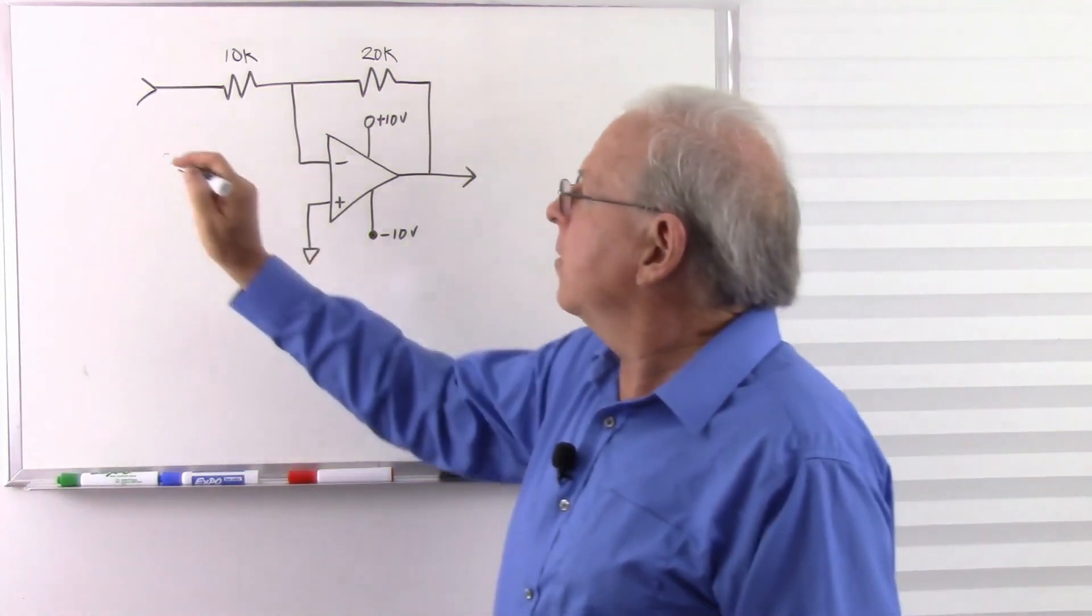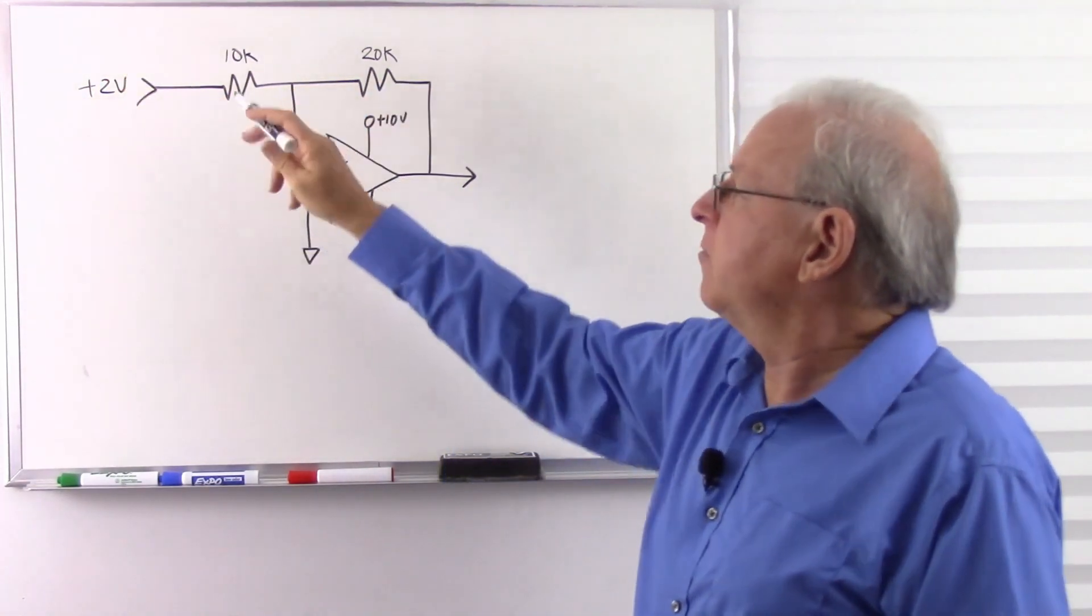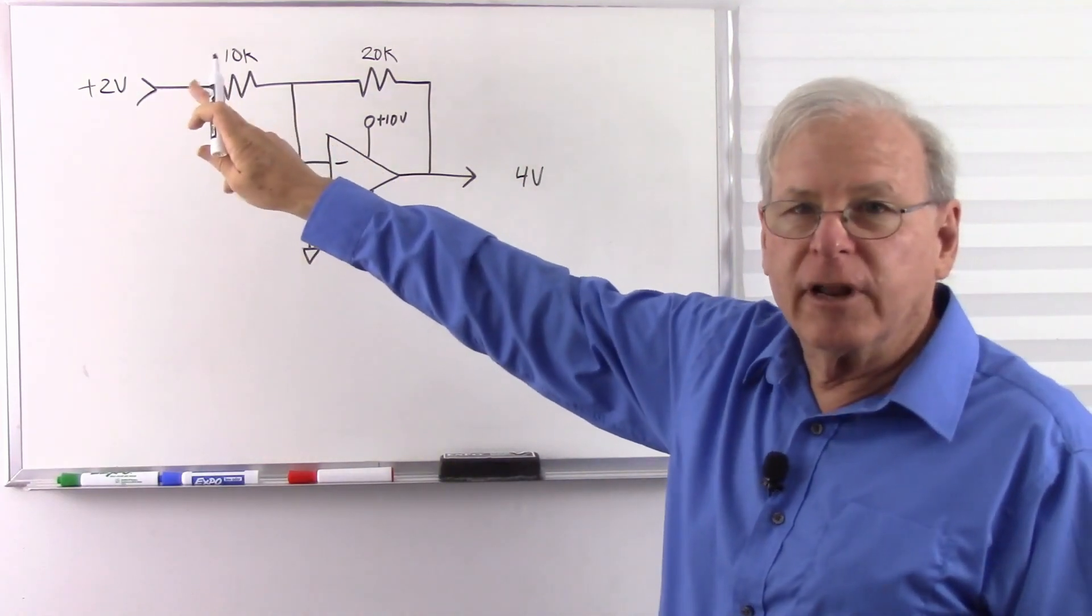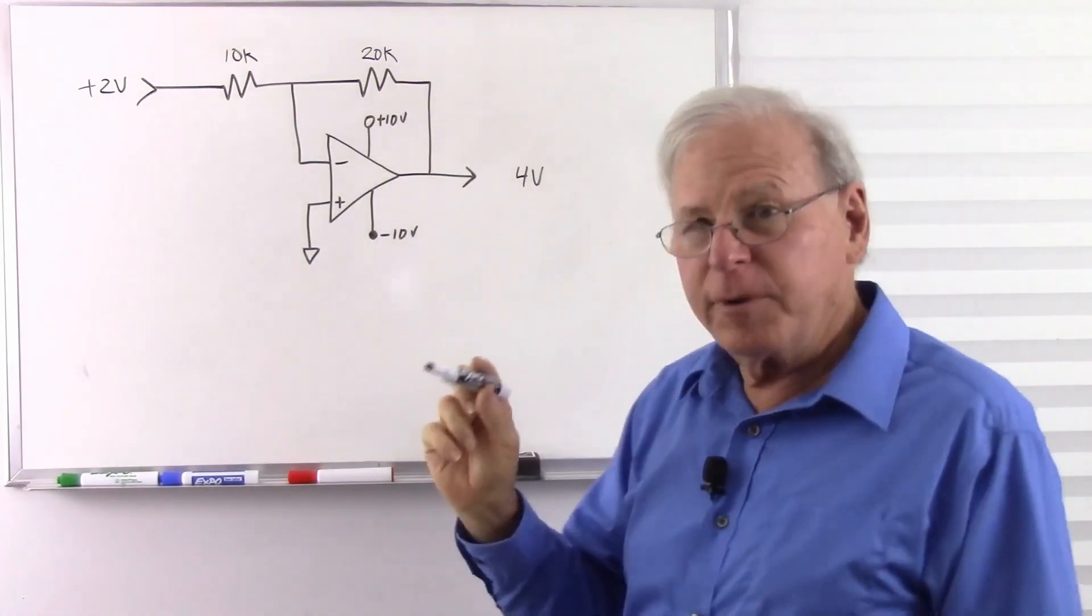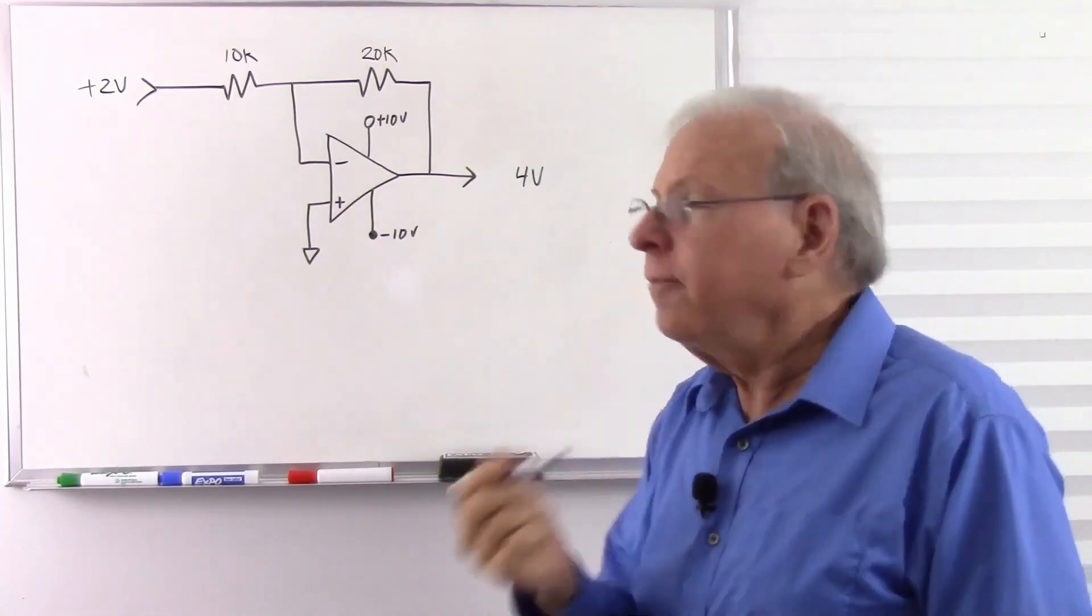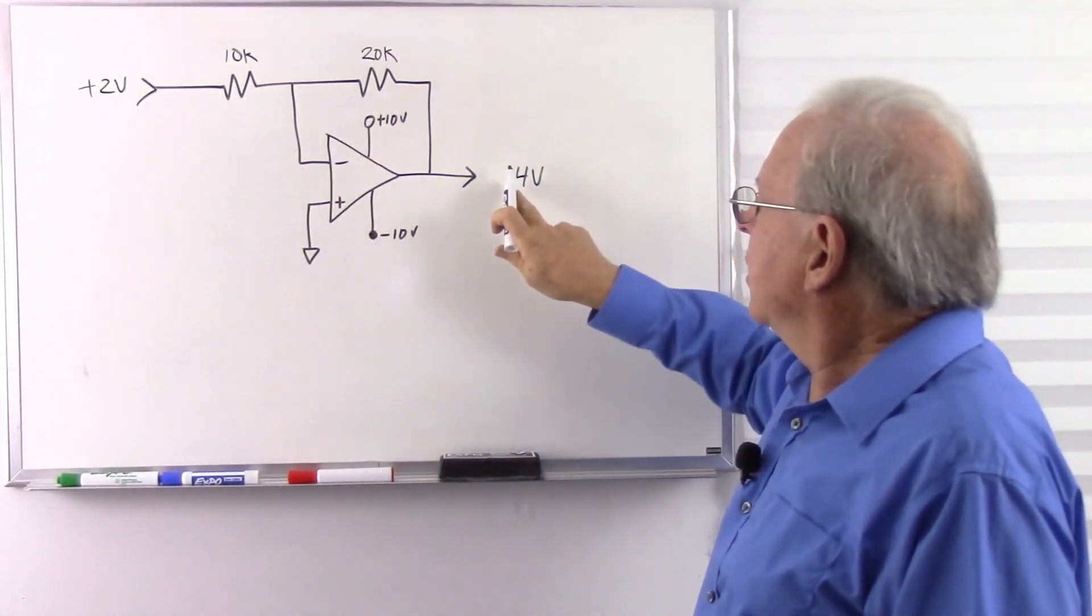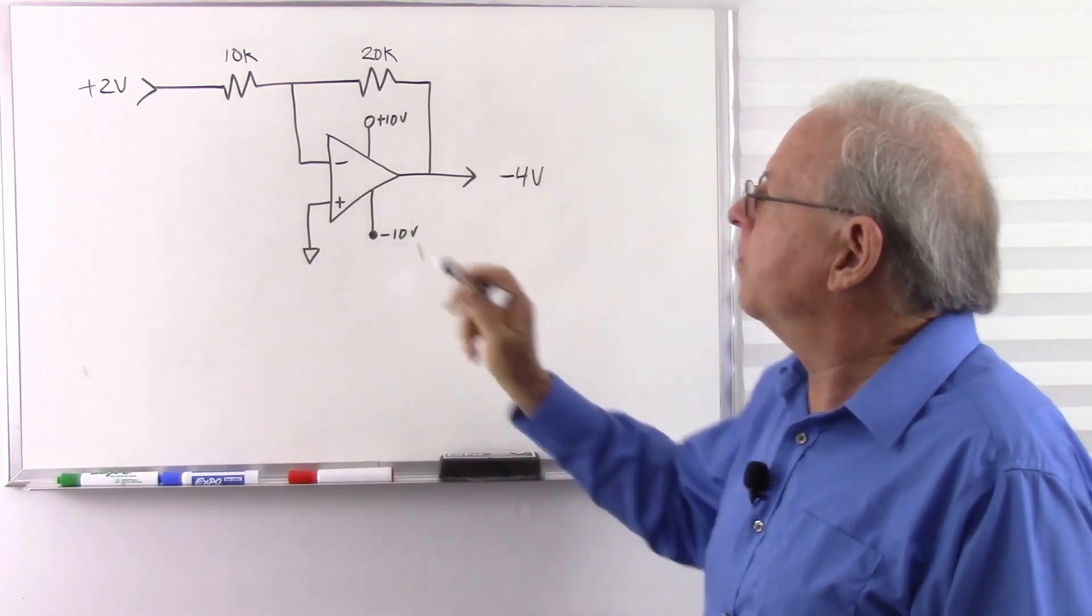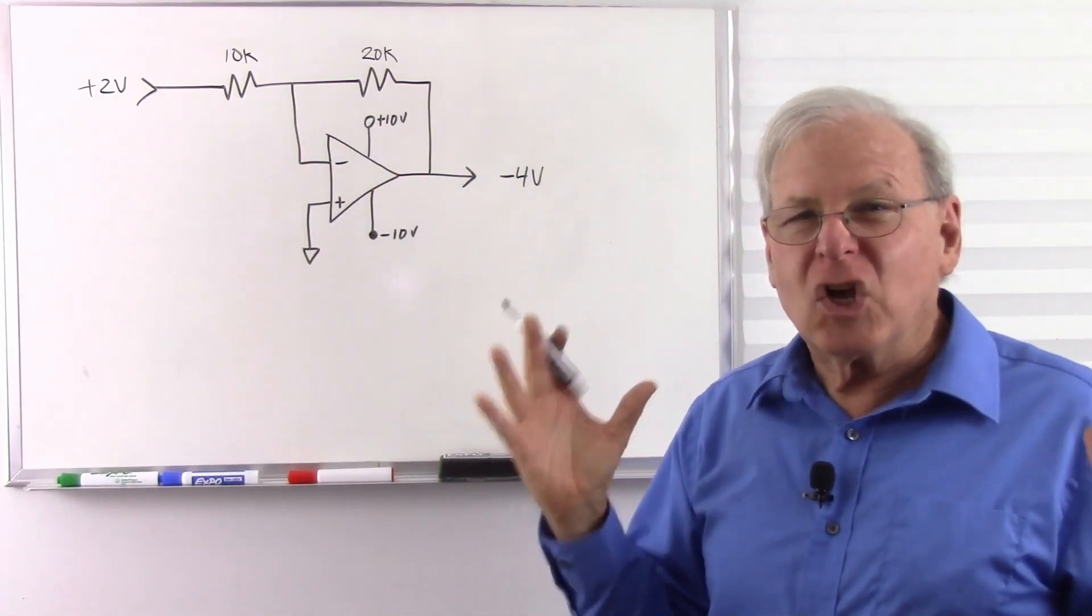The way I explained it was, if I put in, let's say plus 2 volts here, I have a gain of 2, so I'm going to get 4 volts out. But because it's an inverting amplifier, and I explained that in the video, we'll see that this configuration gives us a gain of 2 plus it gives us the opposite polarity. So 2 volts in, minus 4 volts out. And your question is probably, what good is that?